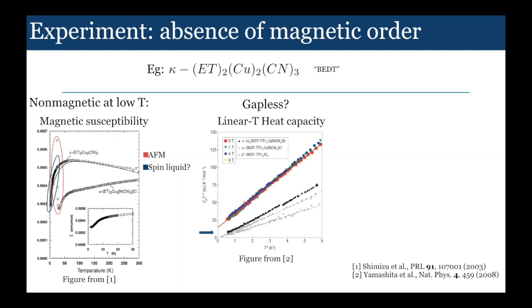Once we know it doesn't seem to order, there's an interesting question of whether it's gapped or gapless. When I say gapped or gapless, I mean the spin fluctuations are gapped or gapless. There's two types of probes you can do. One is a thermodynamic probe measuring the heat capacity. It's actually seen that in the compound there's linear heat capacity, whereas in the sample with order there's no linear heat capacity. So this seems to be strong evidence for there being gapless excitations.